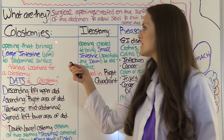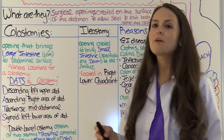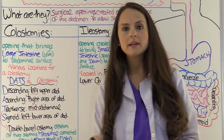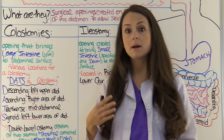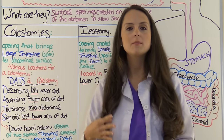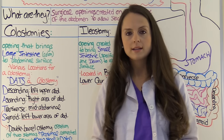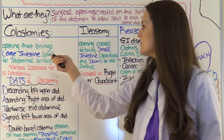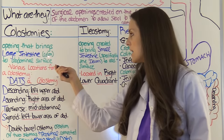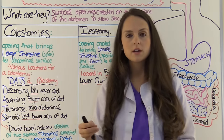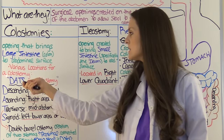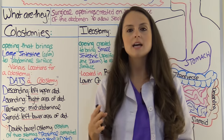Now let's start talking about colostomies. A GI ostomy is where a surgical opening has been created to bring some part of the intestines to the abdominal surface so stool can be excreted rather than through the rectum. A colostomy specifically is a surgical opening that brings the large intestine — the colon — to the surface of the abdomen. There are various locations for a colostomy, so different types.